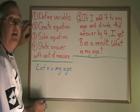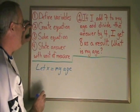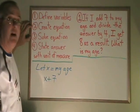Step 2, create the equation. Interpreting this problem, if I add 7 to my age, that means I am saying x plus 7, my age plus 7.